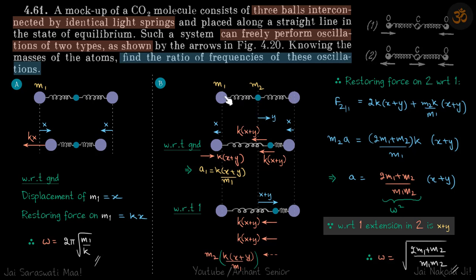Now for the second mode: starting from the equilibrium position, both oxygen atoms are displaced by x and the carbon atom is displaced by distance y. This atom goes left by x, this atom also goes left by x, and the carbon atom goes right by y. So this spring is stretched by x + y and this spring is compressed by x + y.